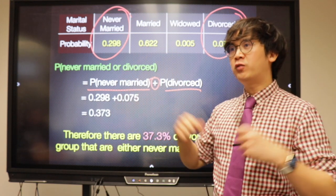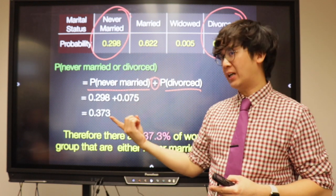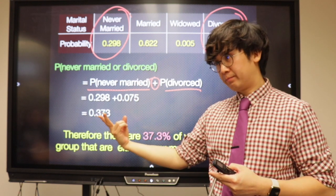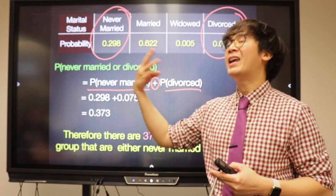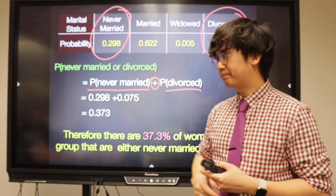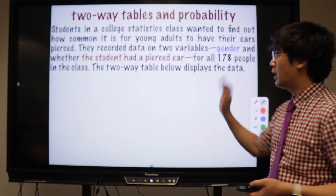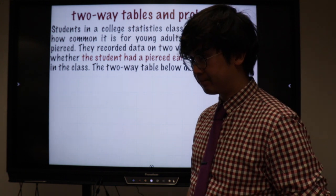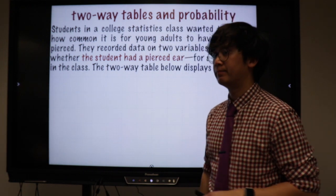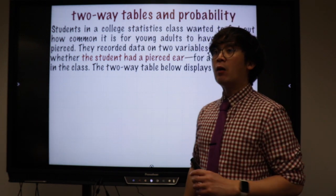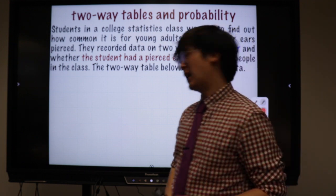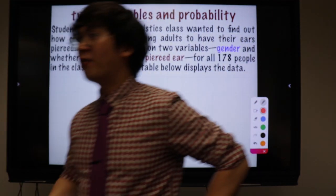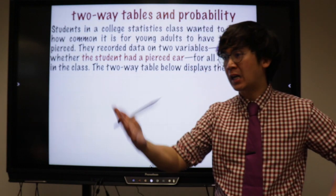Recap: so far we did classical or theoretical probability, one-way table, and independent and dependent events. Now we're working on two-way tables. A two-way table needs to have two variables. Let's create one right now.